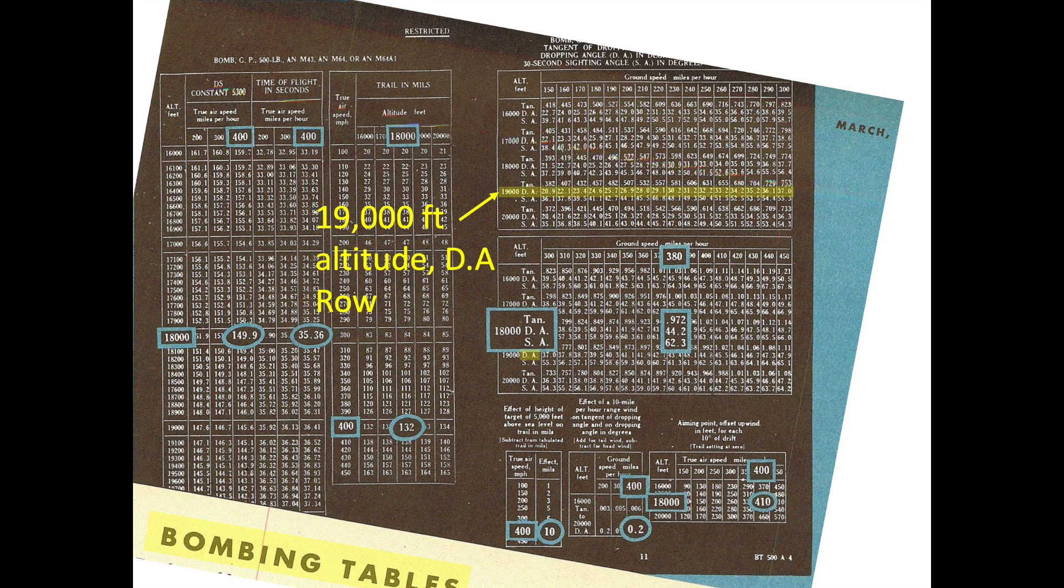The intersection of a bombing altitude row of 19,000 feet and the ground speed column of 200 miles per hour indicates a bomb site dropping angle of 26.9 degrees as needed.